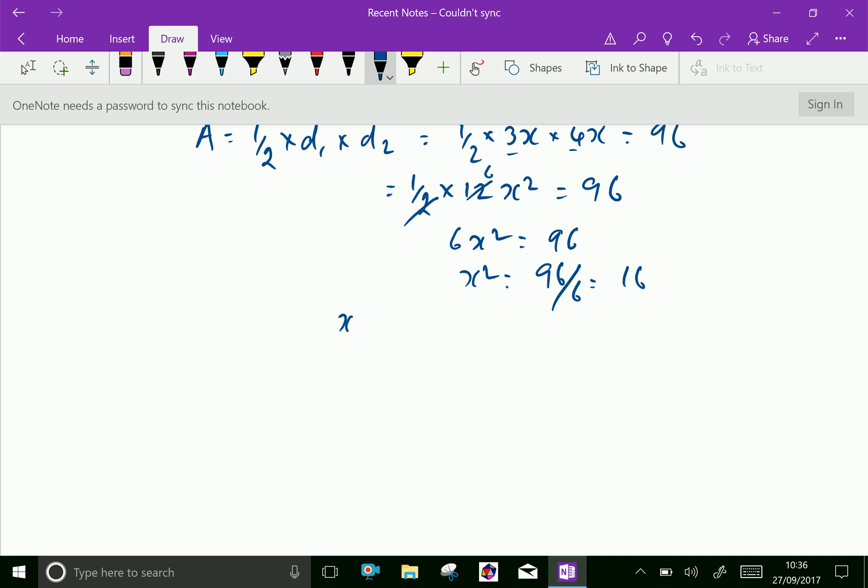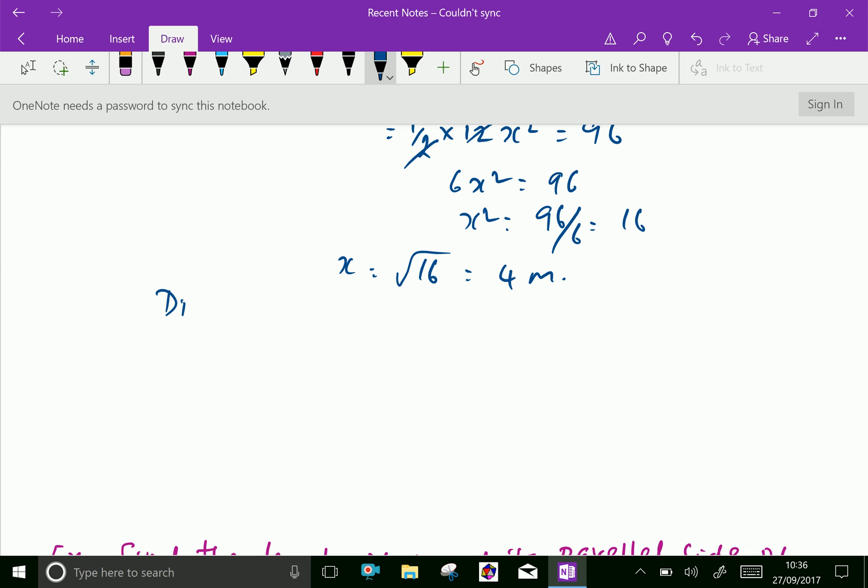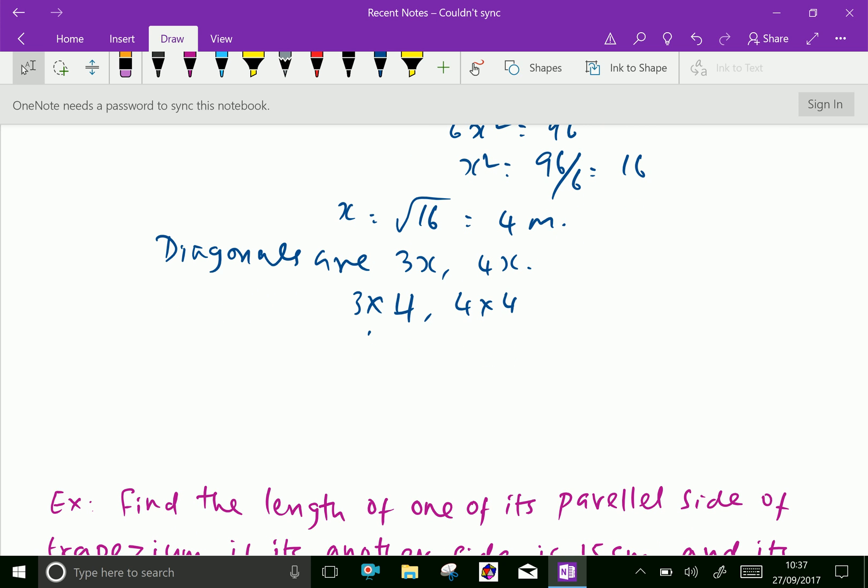Therefore, x equals square root of 16 equals 4 meters. Now, diagonals are 3x, 4x, which is 3 into 4 and 4 into 4, which equals 12 meters and 16 meters.